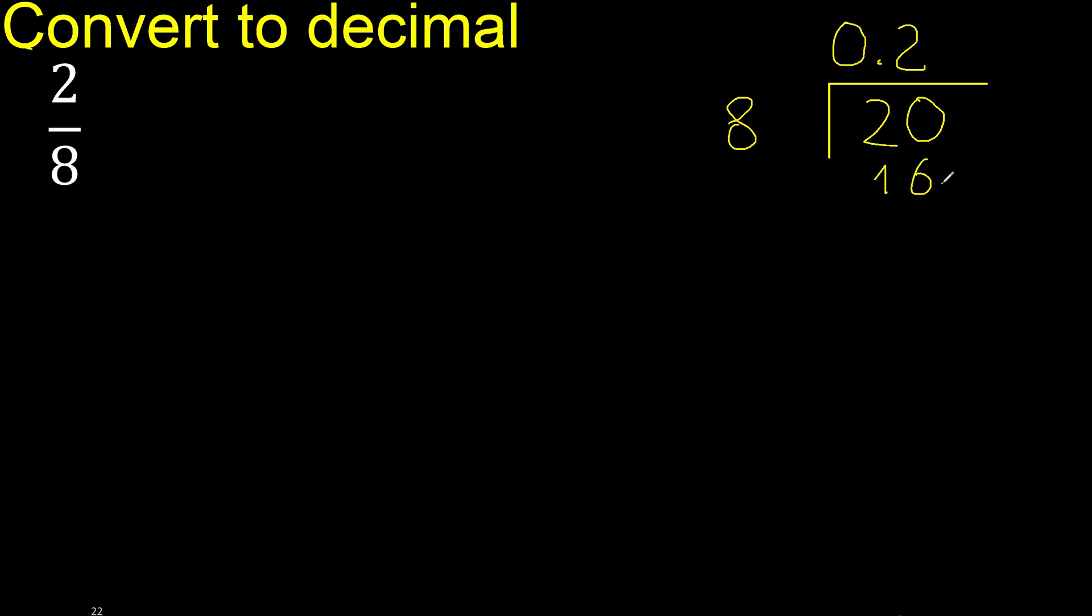16 is not greater and is the nearest. Subtract, 20 minus 16 is 4. There is no number that goes down.